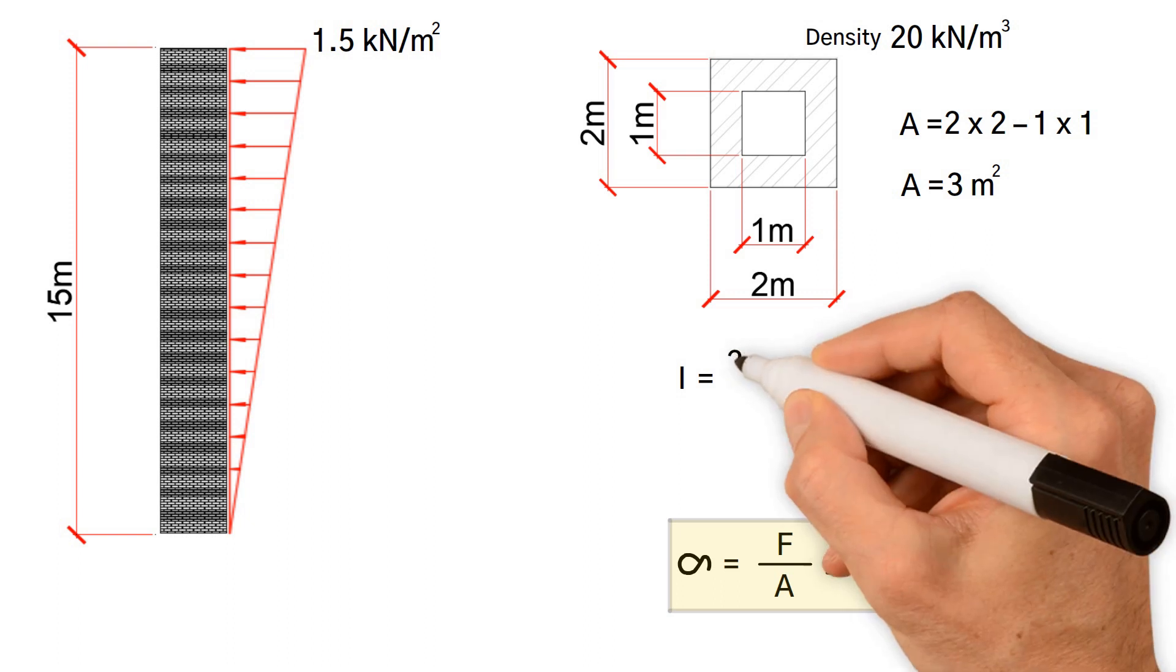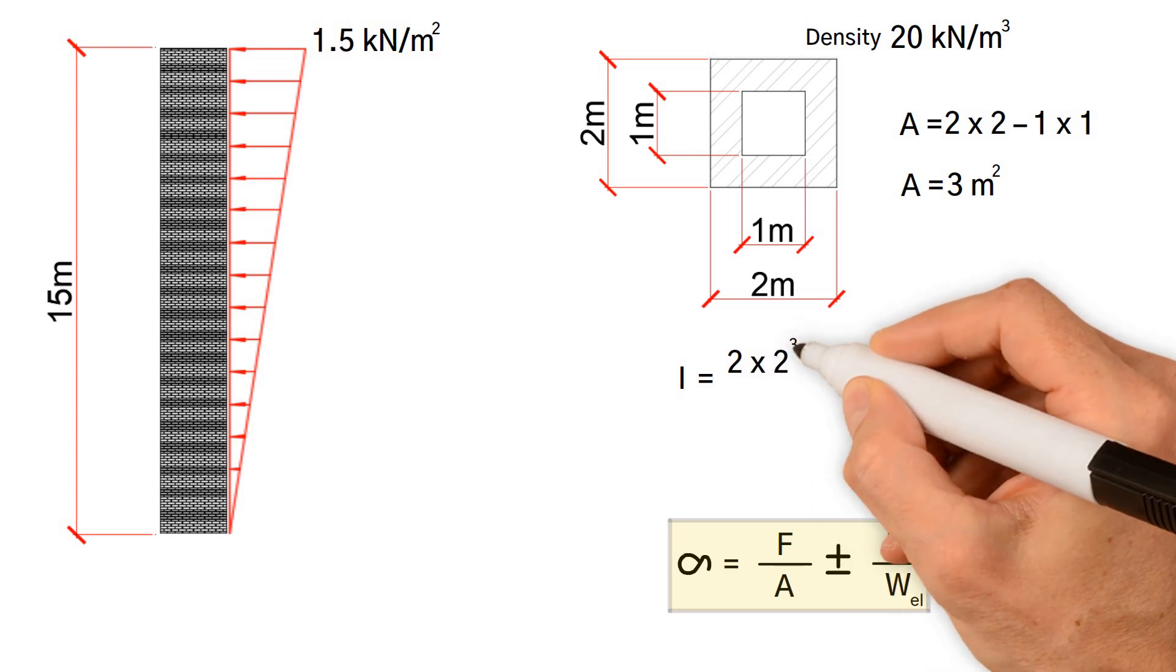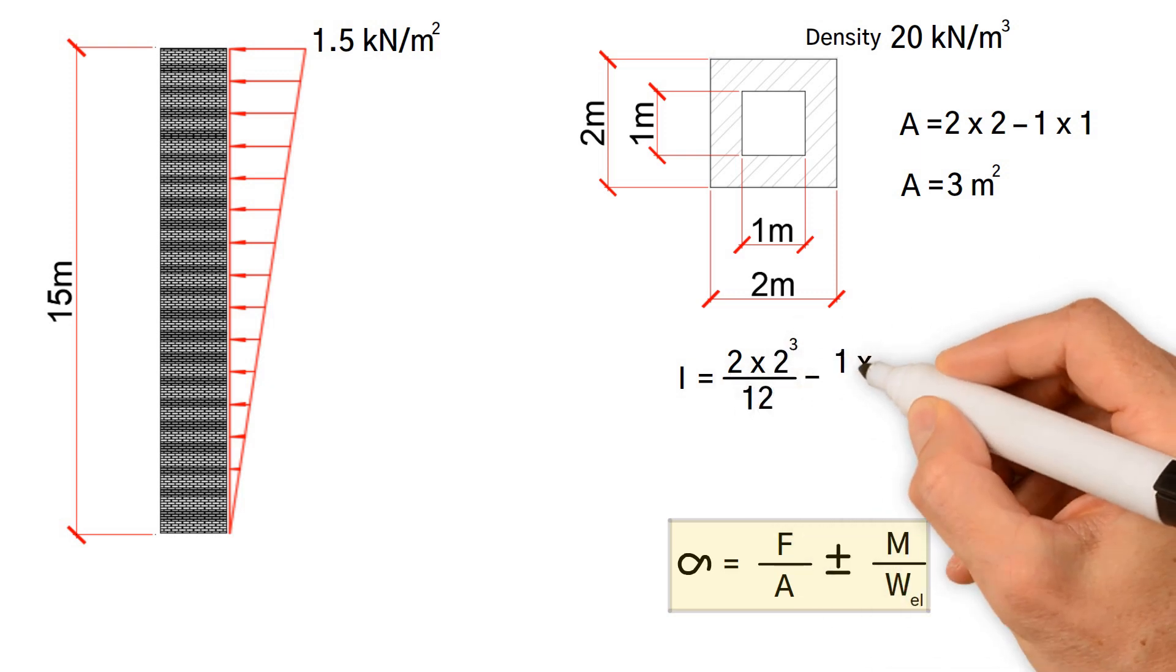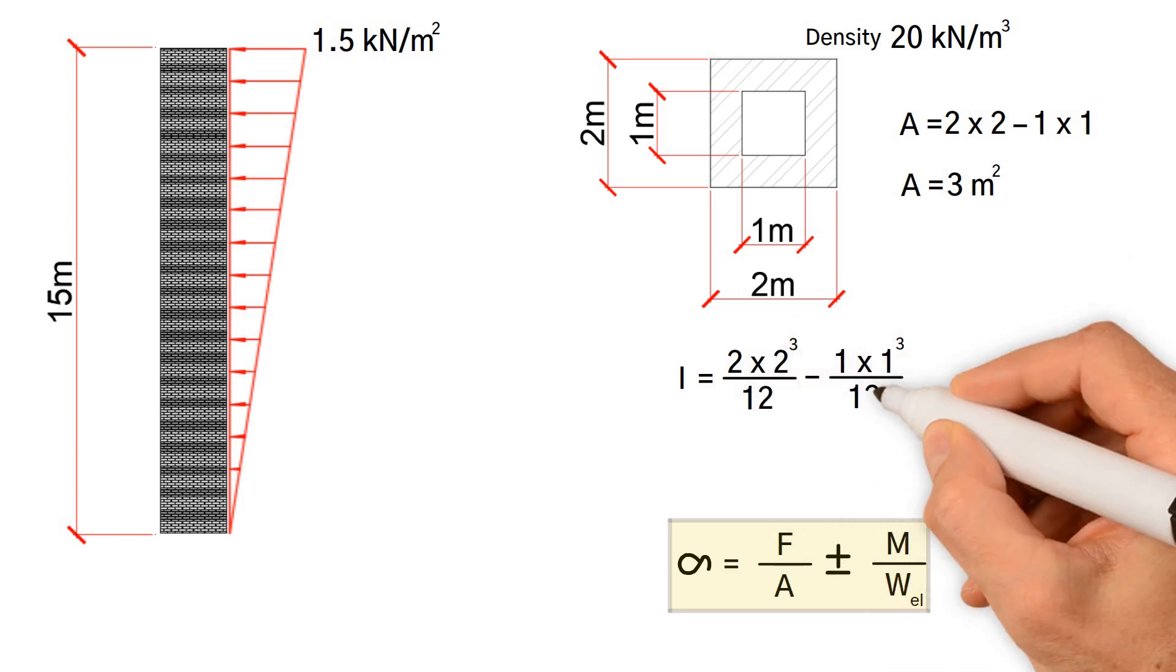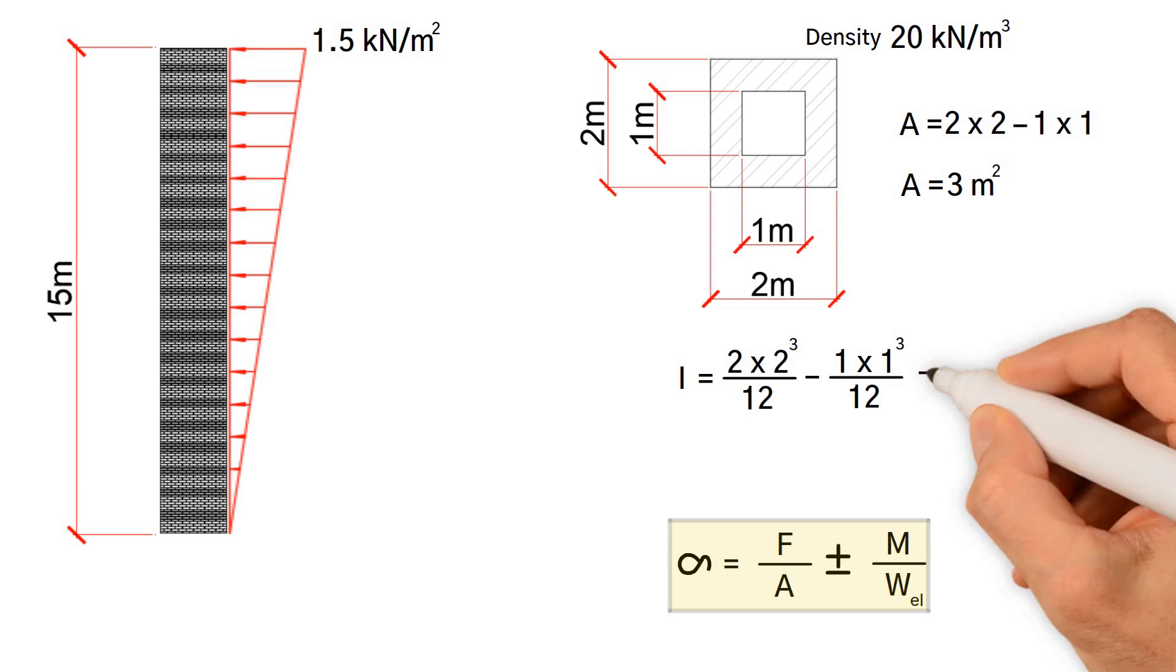As a result, width 2 meters times depth 2 cubed divided by 12 minus 1 meter times 1 cubed divided by 12 gives us 1.25 meters to the fourth in total.